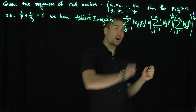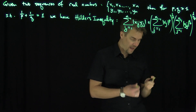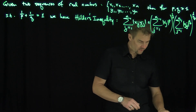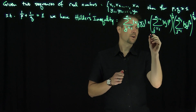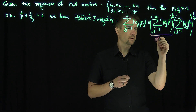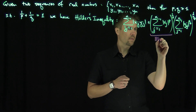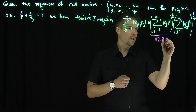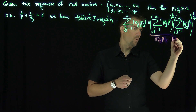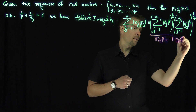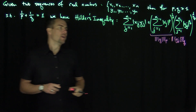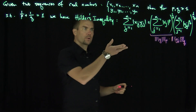These quantities are called the lp norm — this is the little lp norm over the sequence. So this is the sequence xⱼ in little lp, and this is the sequence yⱼ in little lq. Those are norms, and that's what the Hölder inequality states.